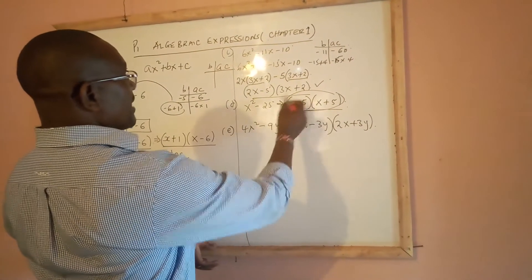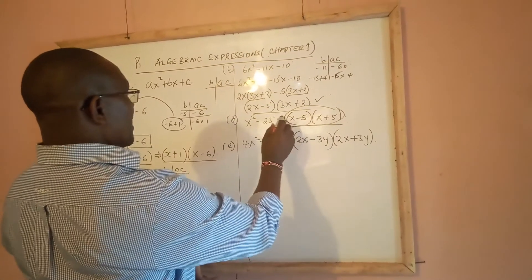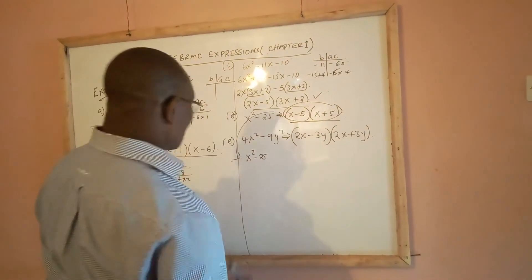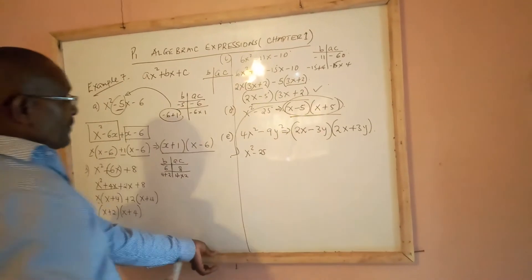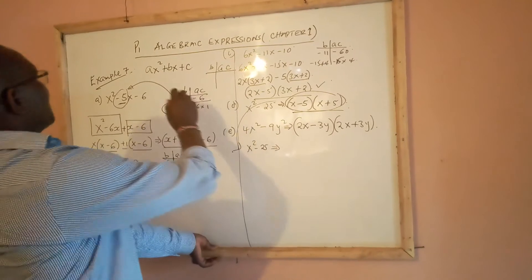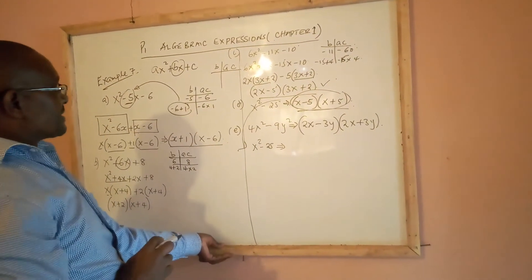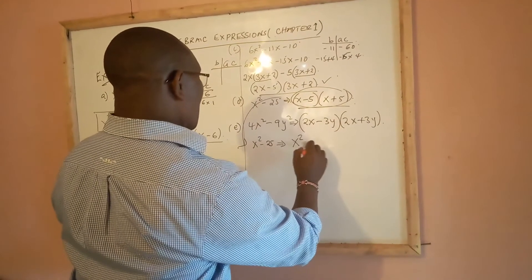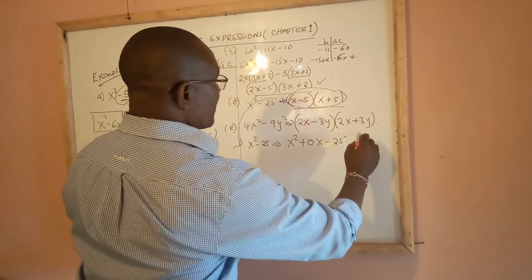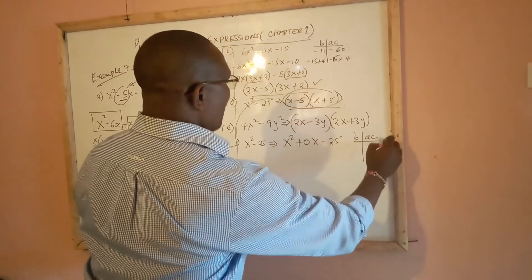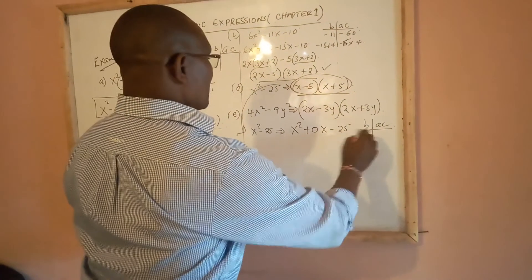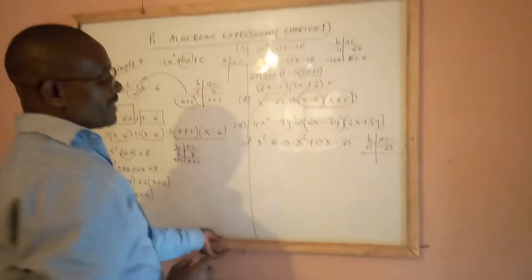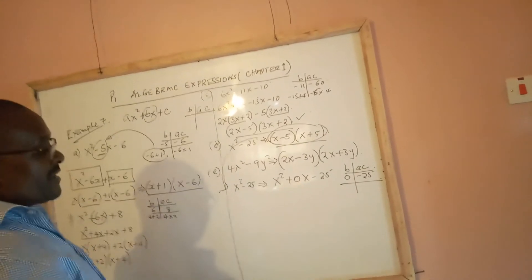Now let's go back and show how the result for x squared minus 25 is realized using the longer method. The expression is lacking the middle term — the bx term — so we rewrite it as x squared plus 0x minus 25. Now b is 0 and ac is 1 times negative 25, which is negative 25. We need two numbers that multiply to negative 25 and add to 0.